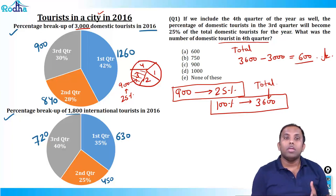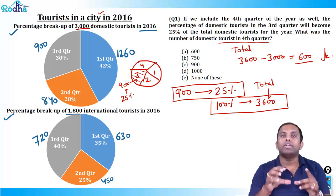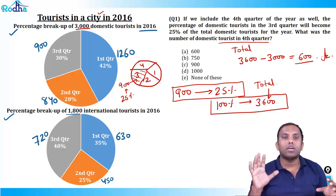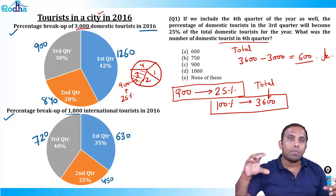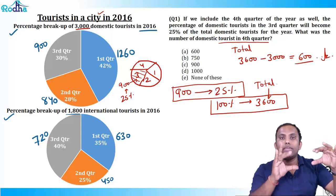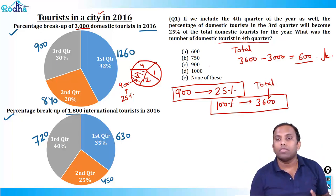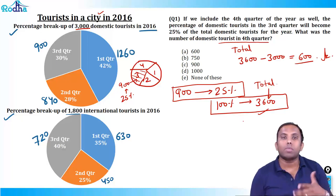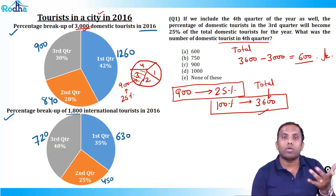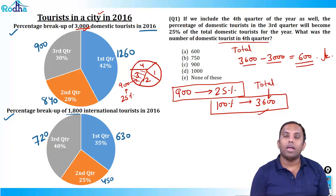To be clear: 900 people visited in the third quarter. Earlier that was 30% of 3000. If we add the fourth quarter, some extra people are added, so 900 reduces from 30% to 25% of the new total. 25% of total equals 900, so total is 3600. Subtract the original 3000 to get fourth quarter: 600. So 600 is the answer.